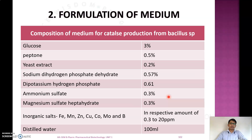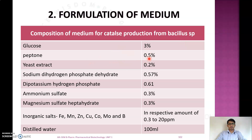The general media composition for catalase production using Bacillus species is: glucose 3%, peptone 0.5%, yeast extract 0.2%, sodium dihydrogen phosphate dihydrate 0.57%, potassium hydrogen phosphate 0.61%, ammonium sulfate 0.3%, magnesium sulfate heptahydrate 0.3%, and inorganic salts including iron, manganese, zinc, copper, molybdenum, and borate in trace amounts, with distilled water made up to 100 ml.